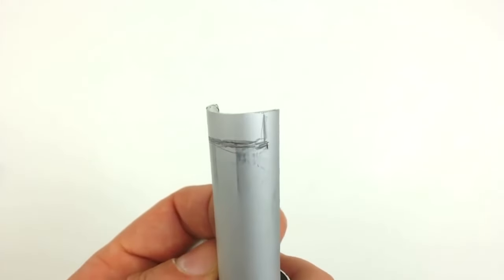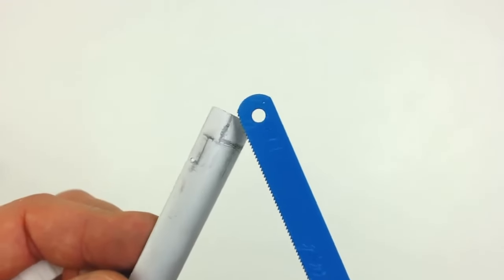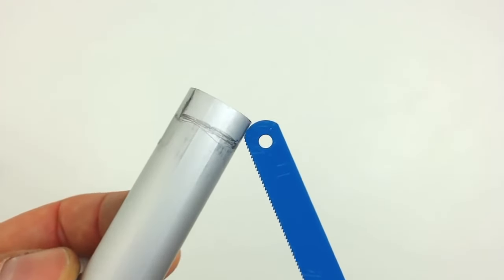We have to leave a distance of about half a centimeter on each side. Next, we have to cut along the marks, and this is how it should look like.